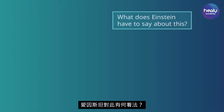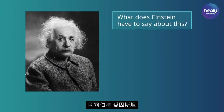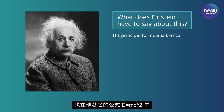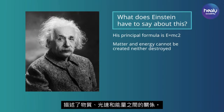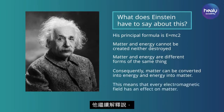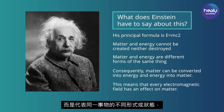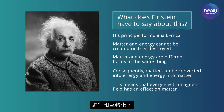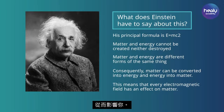Albert Einstein also described the relationship between matter, the speed of light, and energy in his famous formula E equals mc squared. He explained that matter and energy can never be destroyed or created, but represent different forms or states of the same thing that can be transformed into each other. Consequently, electromagnetic fields also have an influence on matter, and thus on you.